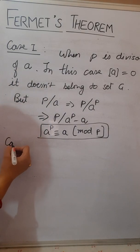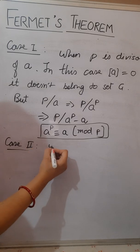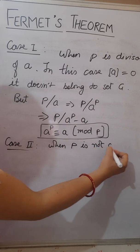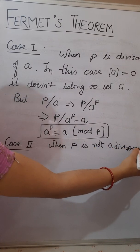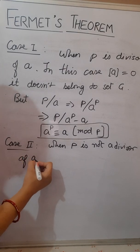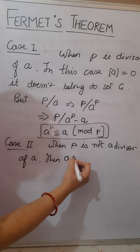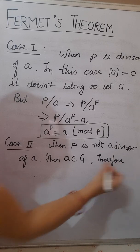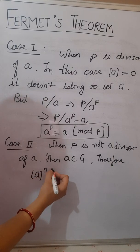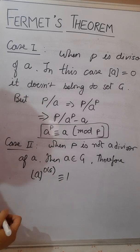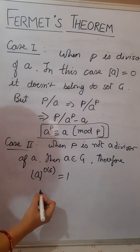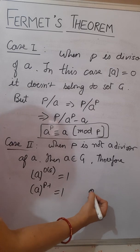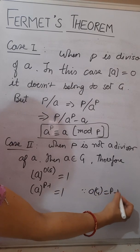Now case 2: when p is not a divisor of a, then a must belong to set G. Therefore a to the power order of G is equals to 1, as 1 is the identity of G. We can write it as a to the power p minus 1 is equals to 1 as order of G is equals to p minus 1.